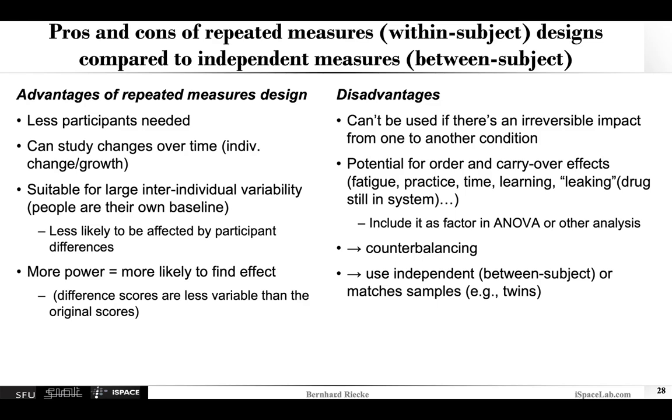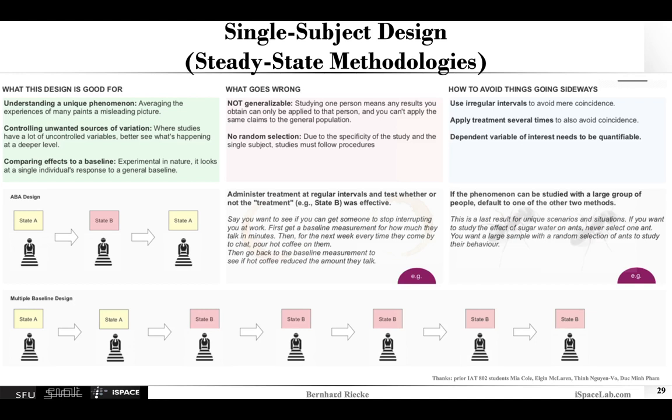So the final experimental design I wanted to discuss, at least briefly, is single-subject design, or sometimes known as steady-state methodologies. Although they might be less common, they can sometimes be very useful. So especially if you have a very unique phenomenon that doesn't really occur very often, or you have only this one participant with that specific condition because it's very rare or there's an accident that happens. So in the medical field, a lot of research has happened with very specific instances, brain damages and so on, that of course you cannot induce in people, but if you happen to have a patient with a very specific condition, this can really be a great way to assess this.